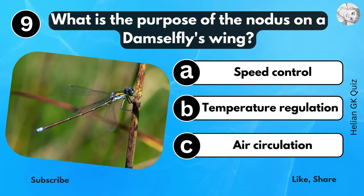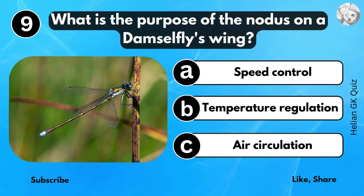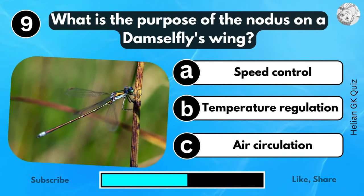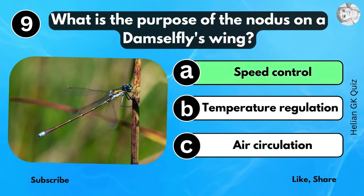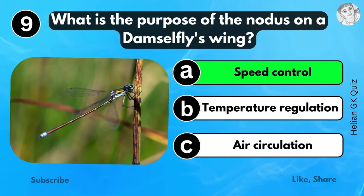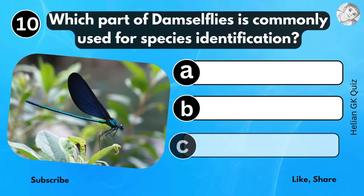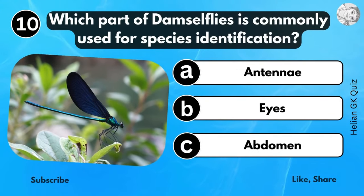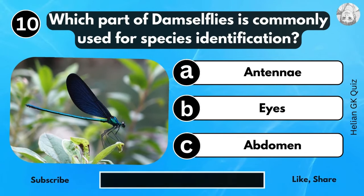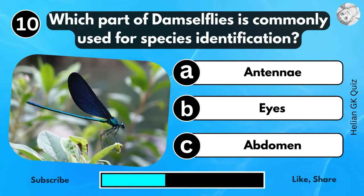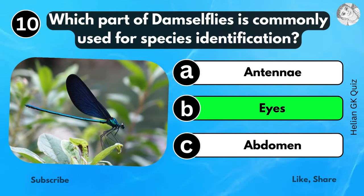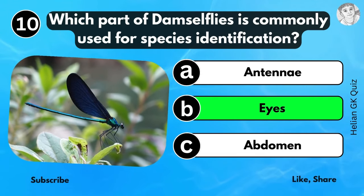What is the purpose of the nodus on a damselfly's wing? Speed control. Which part of the damselfly is commonly used for species identification? Eyes.